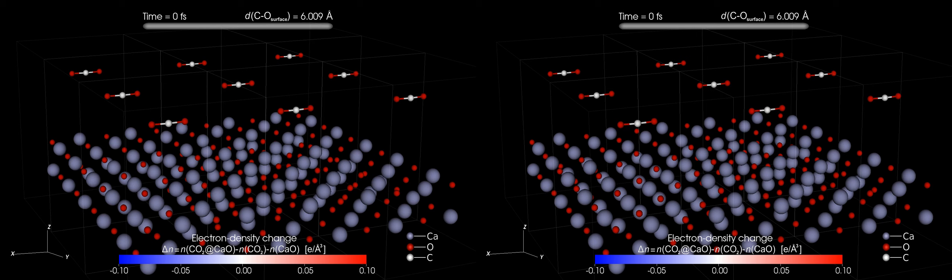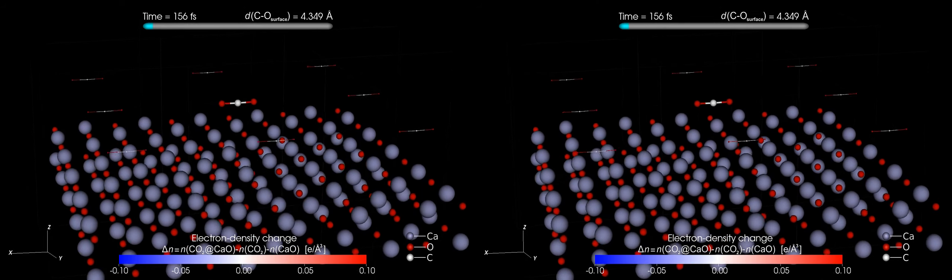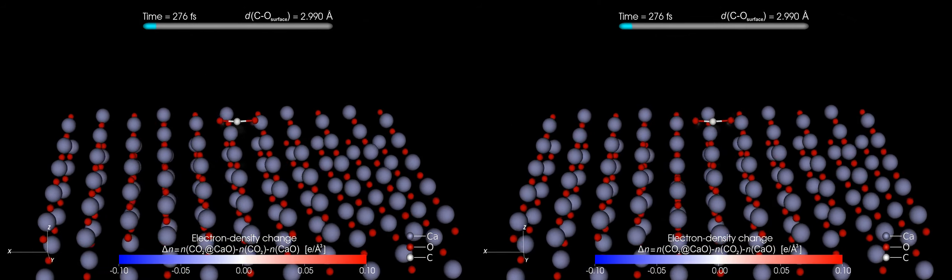When CO2 is far from the surface, the molecule is linear. The atoms in the CO2 molecules are held together by chemical bonds created by the electrons.